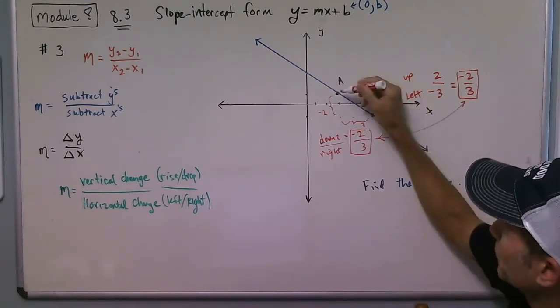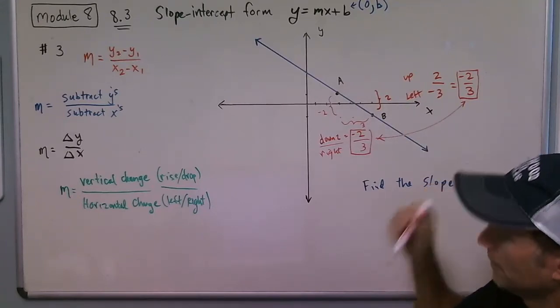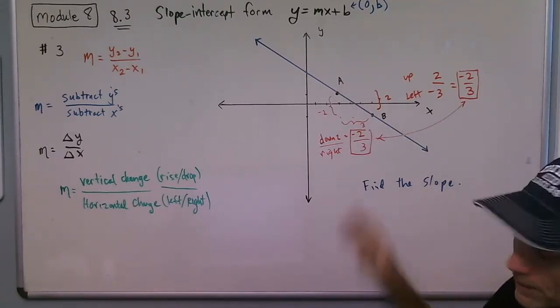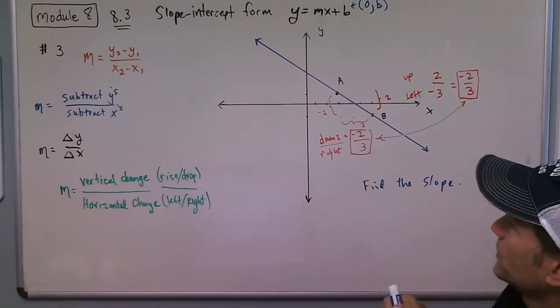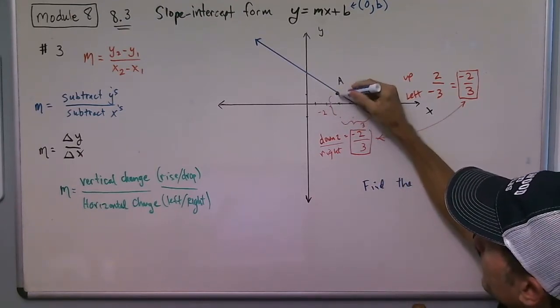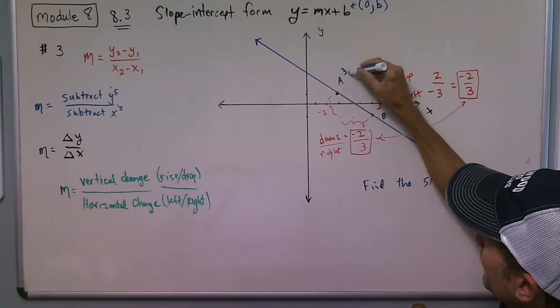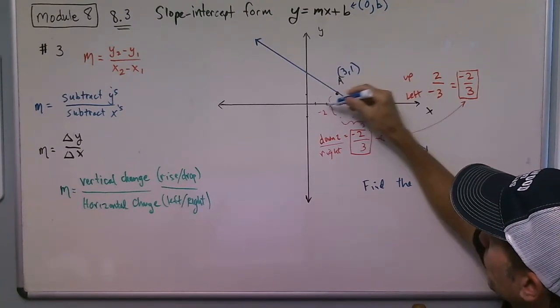But you have to start at one of the points on the line. Now another student might have said, well, I didn't really understand the counting method. What I did was I figured this point was 3, 1, and this point was 6, negative 1.